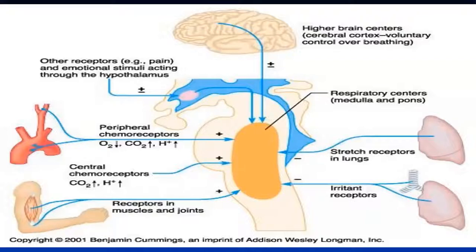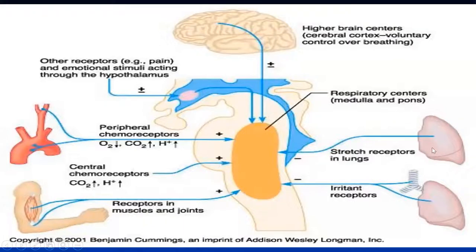We have receptors in the muscles and joints — that is why you breathe more when you are exercising, and in a baby even feeding is an exercise. The peripheral chemoreceptors in the aortic body deal more with blood pressure regulation, while those in the carotid bodies deal more with oxygen and carbon dioxide changes. The carotid bodies are more sensitive to oxygen, while the central chemoreceptors are more related to carbon dioxide, hydrogen, and pH. We also have stretch receptors and irritant receptors in the lung which feed back in a negative way — they inhibit breathing when stimulated.